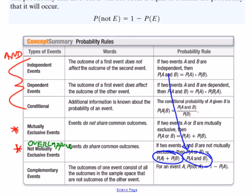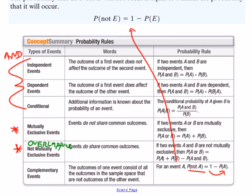You'll see examples of the non-mutually-exclusive OR formula in the videos. Complementary events follow the same rule seen earlier: the probability of something not happening equals one minus the probability of it happening.